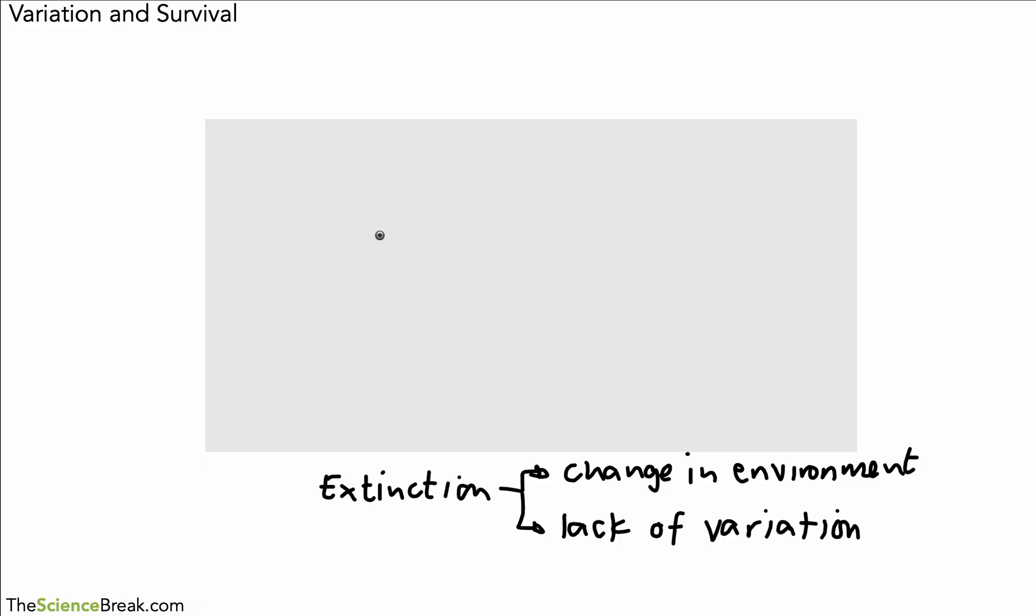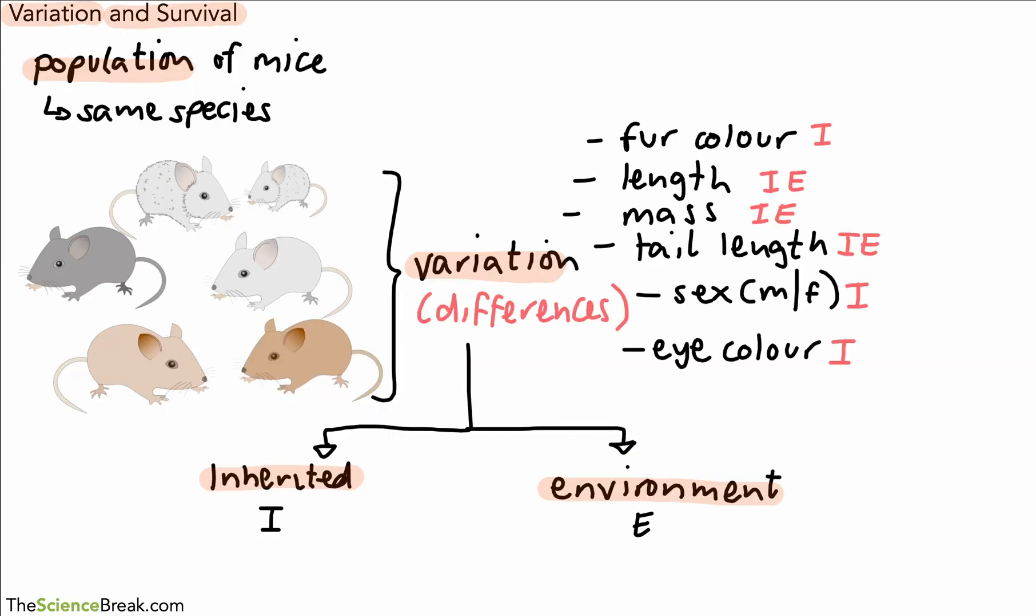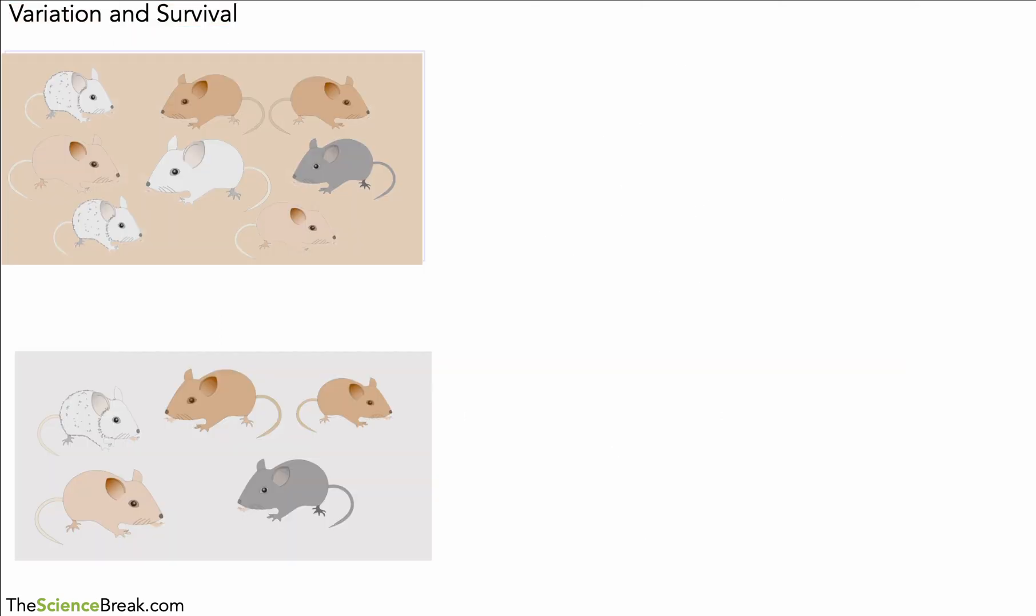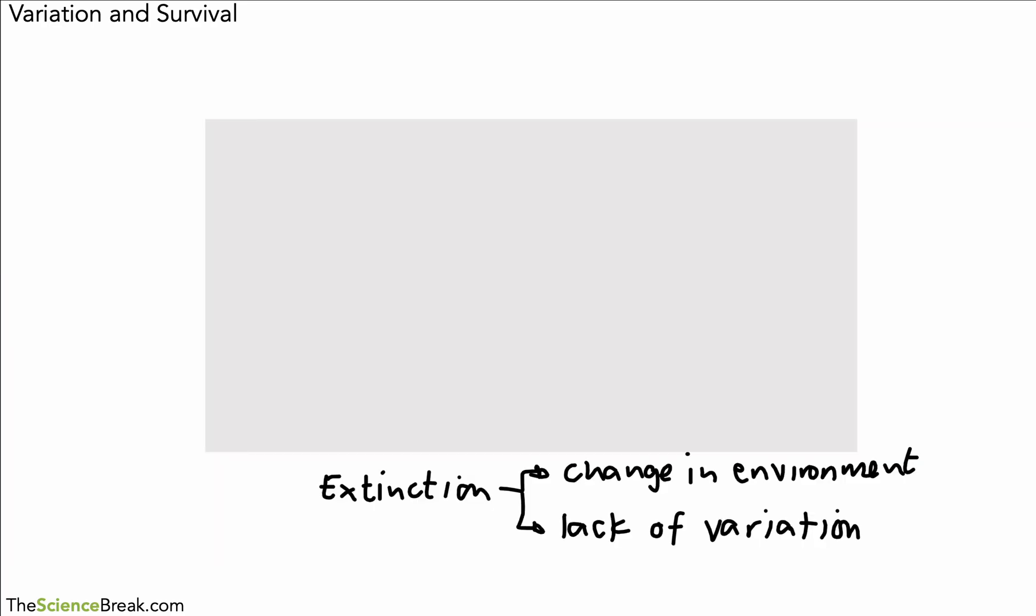So these are a few basic points behind the idea of variation. Variation means differences. We can list off some differences and then classify them whether they're inherited from parents or caused by the environment, or as a result of both. Variation is important to ensure the survival of the species, and if there's very little variation and there's a change in environment, it could cause extinction. So that's it, variation and survival and how it affects species.